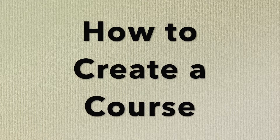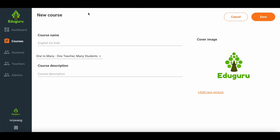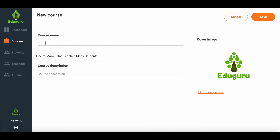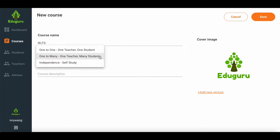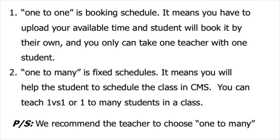Thirdly, how to create a course. Please click the courses icon and click new, then fill in the course name. You can choose which scheduling system you want to apply for each course. For example, one on one is one teacher, one student. This booking system means the teacher should open their available time slots in the platform and students will have access to choosing a specific time and date.